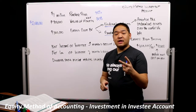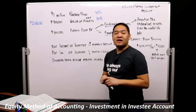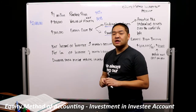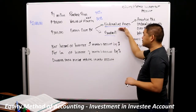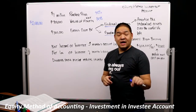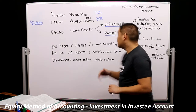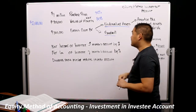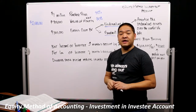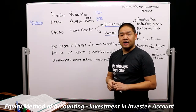There are two things we can do with that excess $300,000. We can either allocate part, all, or none of the $300,000 to undervalued assets, or we can allocate part, all, or none of the $300,000 to an account called Goodwill. Goodwill is something that we review every year for impairment, and if we find that there is an impairment, we reduce Goodwill by the impairment charge.